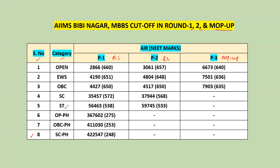Next categories: SC, ST, and PH — physically handicapped, i.e., persons with disabilities (PWD). PH candidates have also appeared in Phase 1. So they are different categories. OP is open category, OBC is non-creamy layer, and OBC-PH are PH candidates in the OBC category.